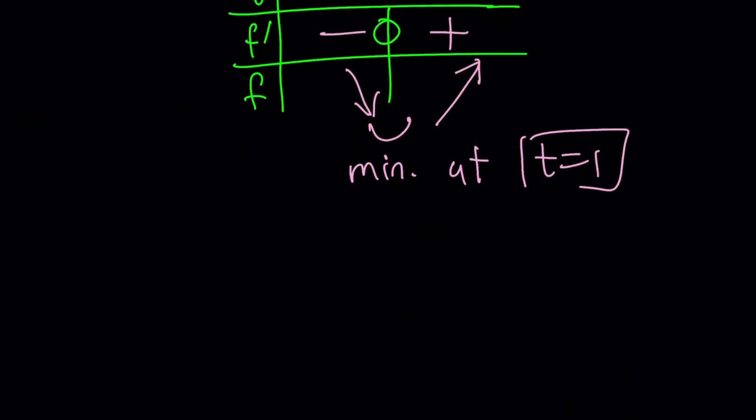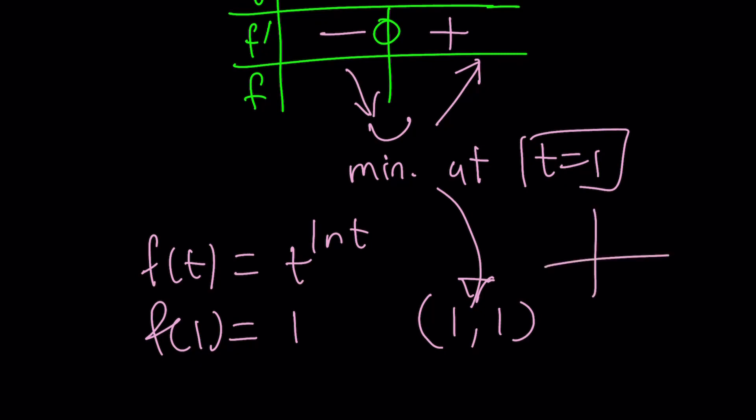So, we have a minimum at t = 1. What does that imply? It means that the minimum value is also 1, because if you think about f(t) = t^(ln t), f(1), where the minimum occurs, is 1^(ln 1), which is 0, so it's 1. So we have a minimum at (1, 1), to be more accurate. What is that supposed to mean? It means that we have a function that makes a minimum here, and it goes down first, and then it goes up next. So it's kind of like a parabola. It's not a parabola. It's sort of shaped like a curve, like a parabola.